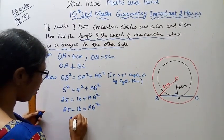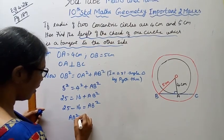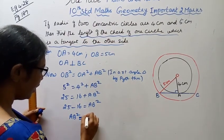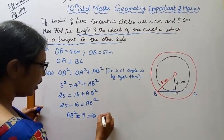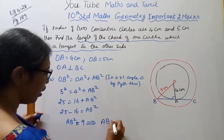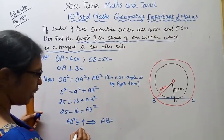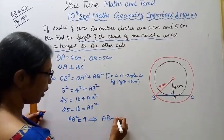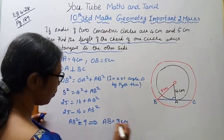AB square equals 9. That implies AB equals 3 — since 3 squared is 9. Therefore AB equals 3 centimeters.